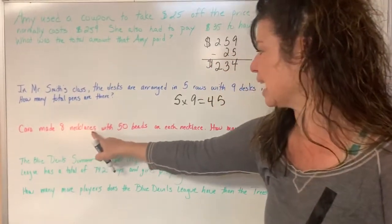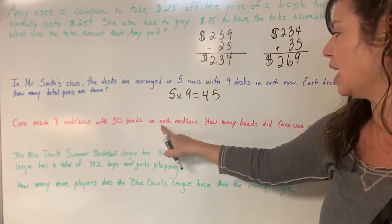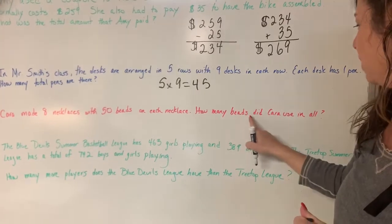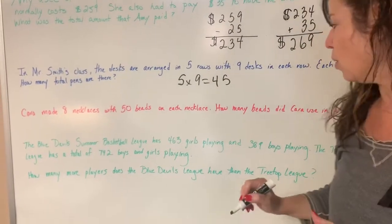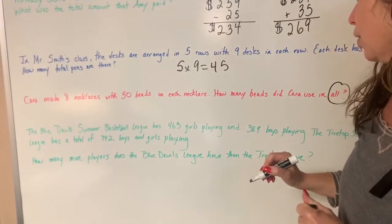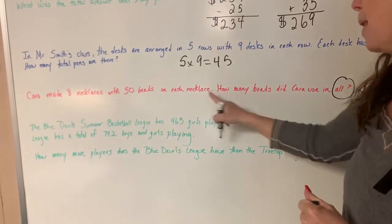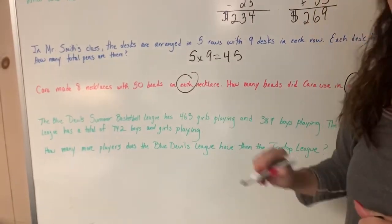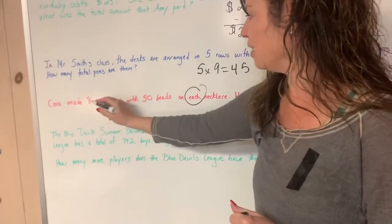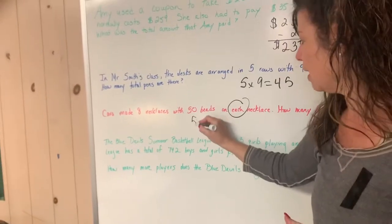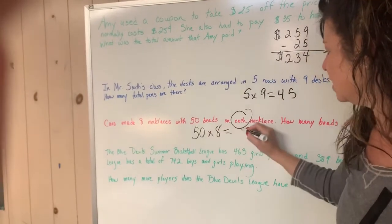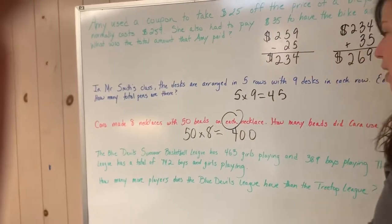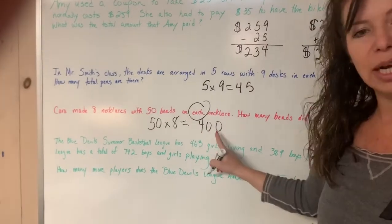Kara made eight necklaces with 50 beads on each necklace. How many beads did Kara use in all? I see that word 'all.' But I also see the word 'each' over here. So I know to multiply. Now I know five times eight is 40, but I'm multiplying 50 times eight. So I add that zero and I get 400. So Kara used 400 beads in all.